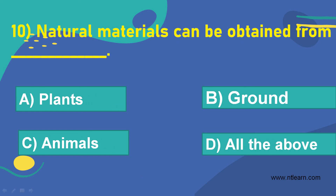Natural materials can be obtained from blank. Option A: plants. Option B: ground. Option C: animals. Option D: all of the above.